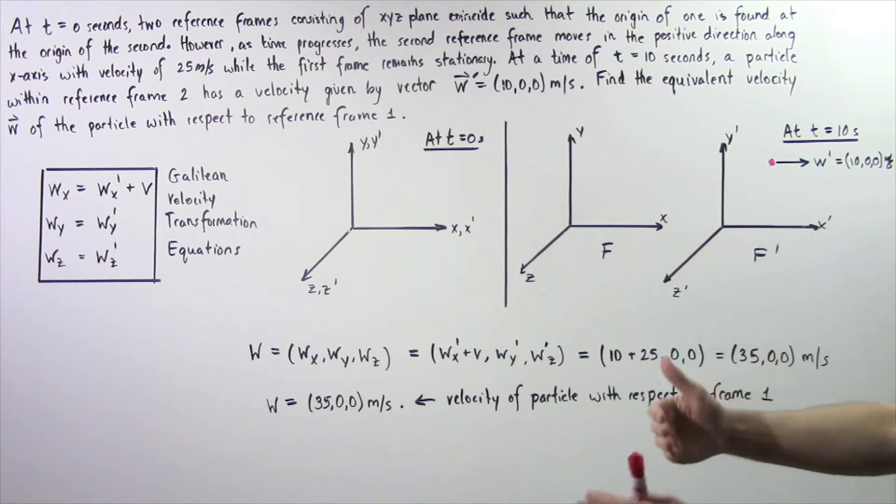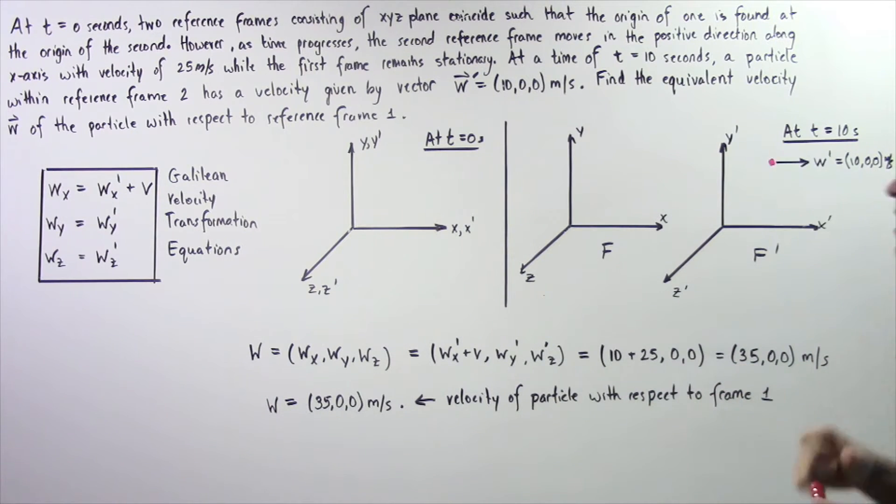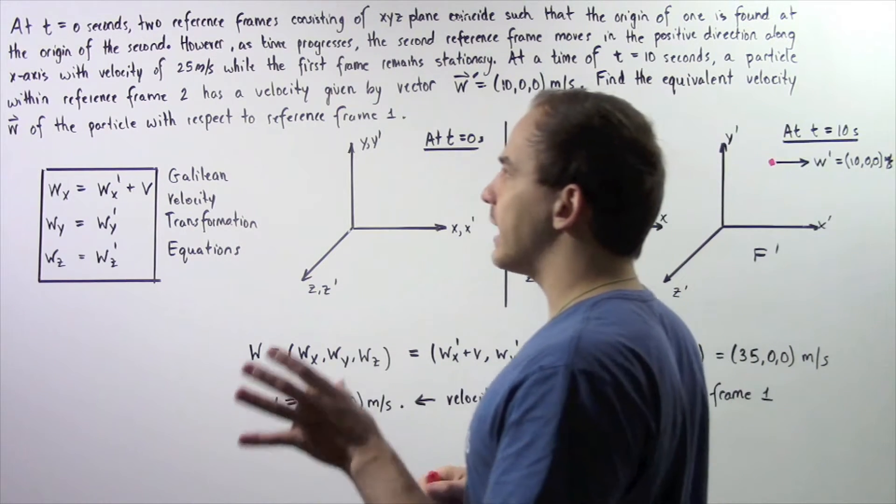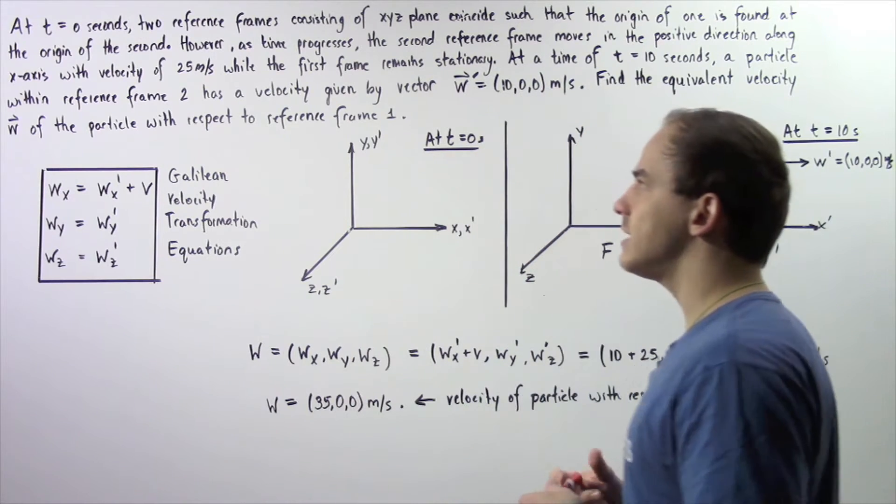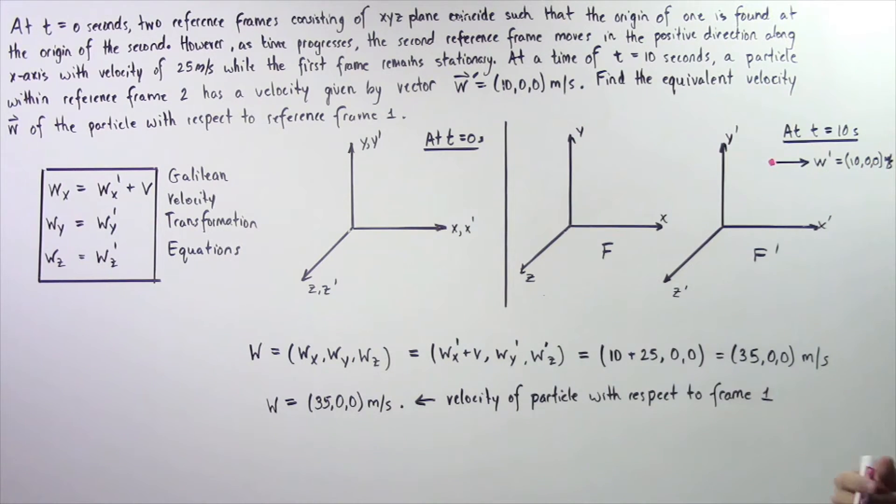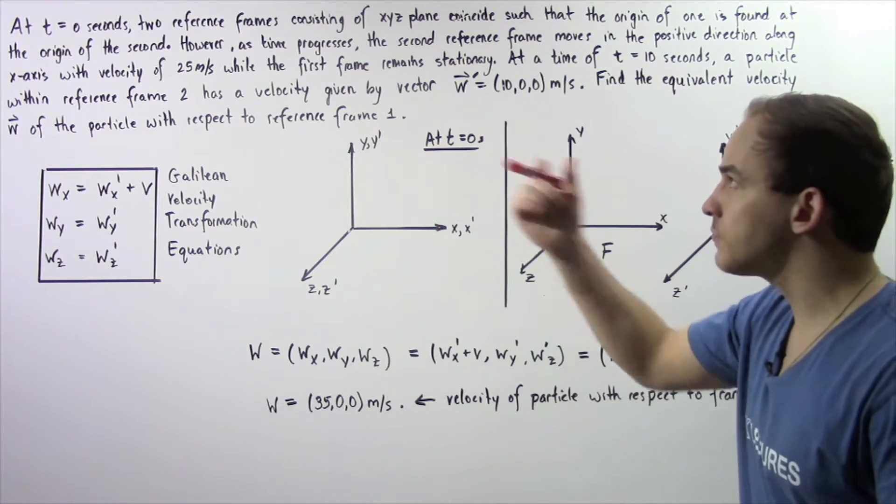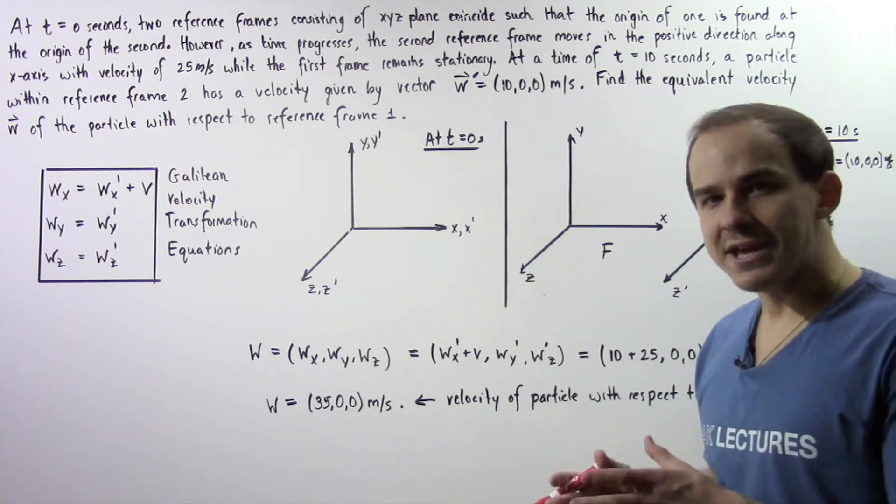the second reference frame begins to move in the positive direction along the X axis with a velocity of 25 meters per second while the first frame remains stationary.